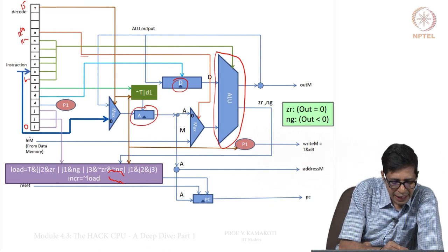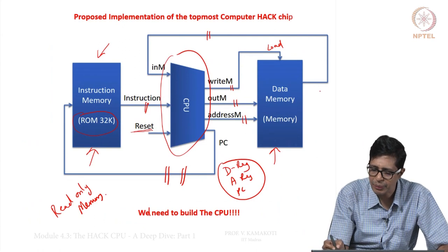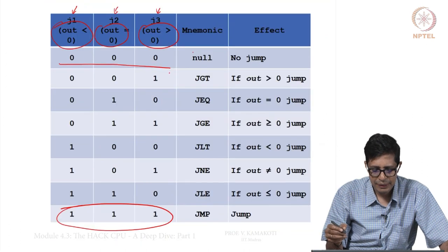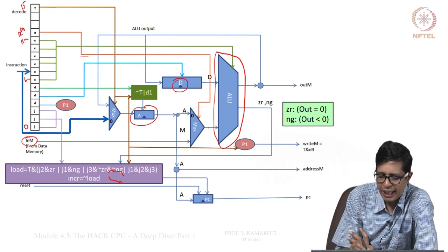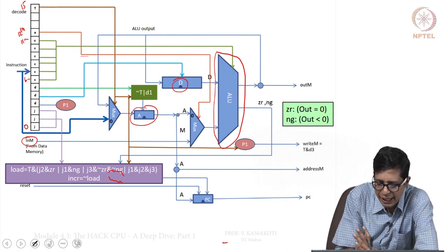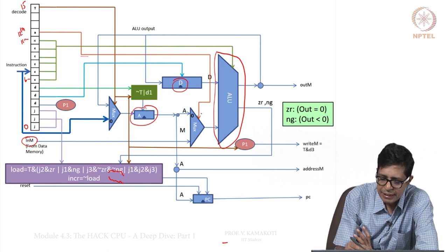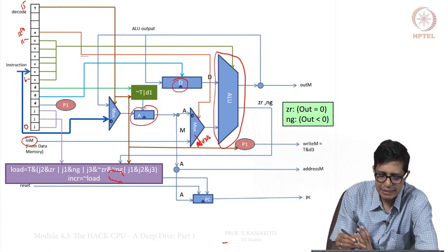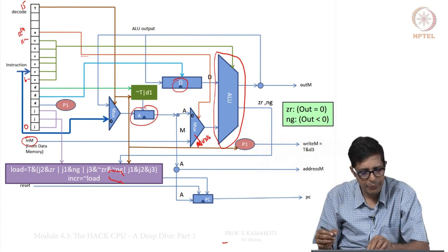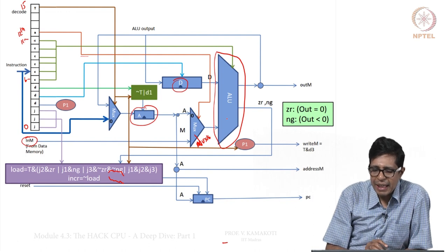The Y input to the ALU depends on the small a-bit (bit 12): it can be the output of the A register or the output of the data memory. This is handled by a MUX16 — 16 lines come from the data memory and 16 lines come from the A register, and the MUX, depending on the a-bit, routes one of those 16-bit values to the ALU.